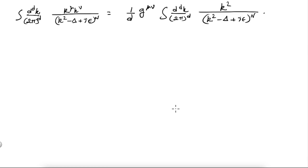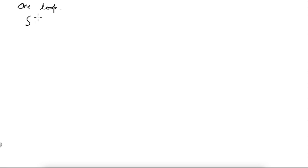Let us continue from where we left last time. We will work at one loop and suppose we get the following integral from some Feynman diagram that you are calculating at one loop, which is the integral d⁴k over (2π)⁴, 1 over (k² − Δ + iε)².